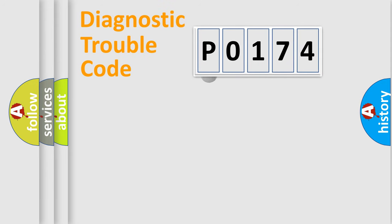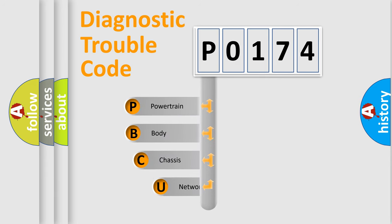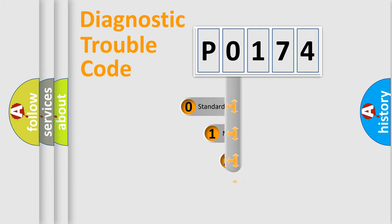First, let's look at the history of diagnostic fault code composition according to the OBD2 protocol. We divide the electric system of an automobile into four basic units: powertrain, body, chassis, and network. This distribution is defined in the first character of the code.